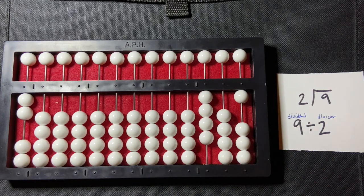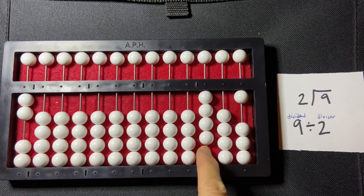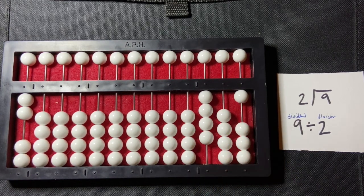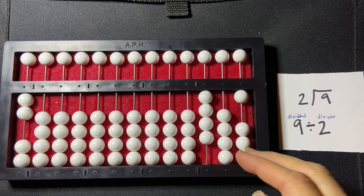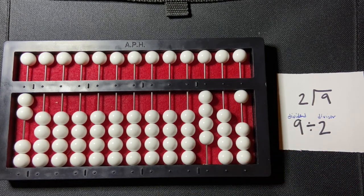And in this case when I read my quotient I see I have a remainder and so my quotient is 4 remainder 1. And that's how you do a one digit by one digit division on the abacus using the counting method.